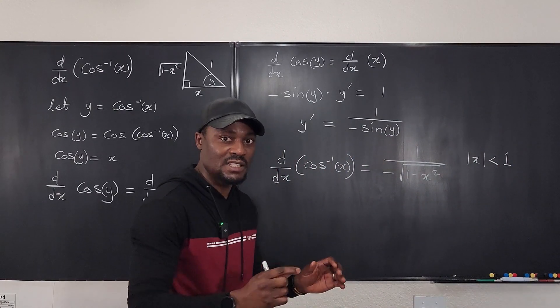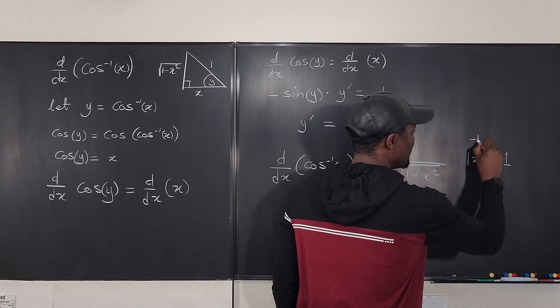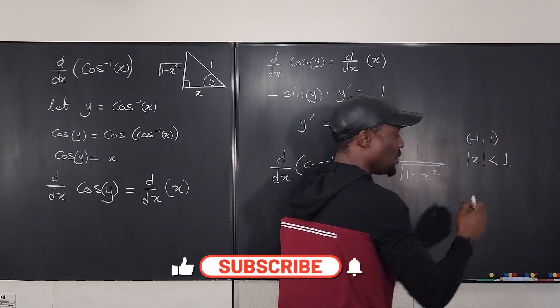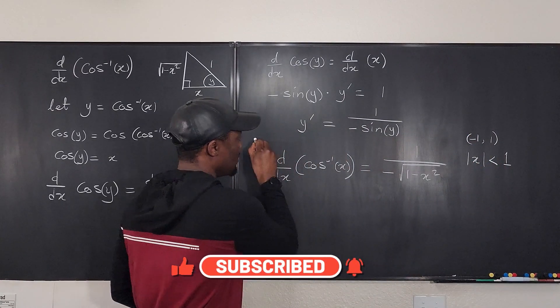So you're saying x is between, or you can write it this way from negative one to one. You do not include the extreme values. This way or this way. And this is your derivative.